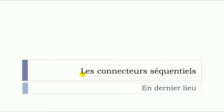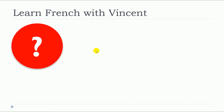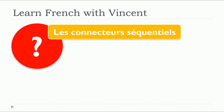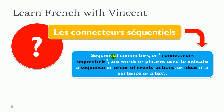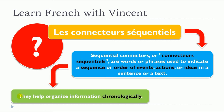In this lesson, we will see together les connecteurs séquentiels, but more precisely, we will see en dernier lieu. Sequential connectors, or connecteurs séquentiels, are words or phrases used to indicate a sequence or order of events, actions or ideas in a sentence or a text. They help organize information chronologically.